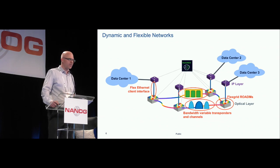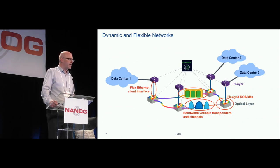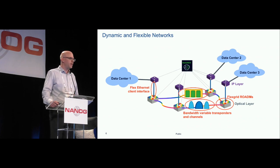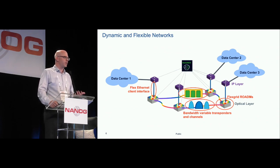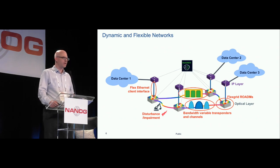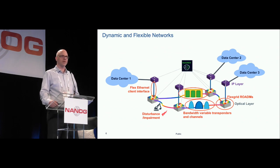Coming back to dynamic and flexible networks: we have a lot of flexibility on the optical layer — flexible client interfaces, bandwidth-variable transponders and channels, super channels with multiple bundled optical channels, and flex-grid ROADMs where you can vary bandwidth for different channels. There are many free parameters to tweak, and you need intelligence to make good decisions. We also want to improve sensing capabilities: if a disturbance occurs — like a backhoe digging near your fiber — we want to sense the problem and take action.